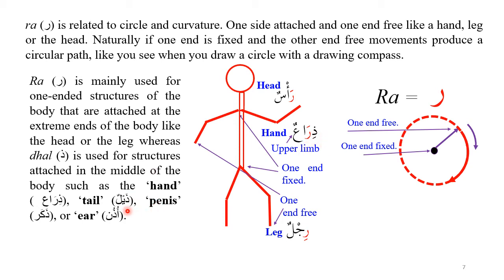Za indicates the structure is on the outside of the body. For example, 'zailun' (tail), 'zakar' (penis), and 'uzunun' (ear) are all in the middle and on the outside of the body. If things are inside the body, dal is used — 'damun' (blood) or 'dimagh' (brain) are inside. 'Dahala' means he entered inside and 'zahaba' means he went out. So za is always associated with something outside and dal with something inside.